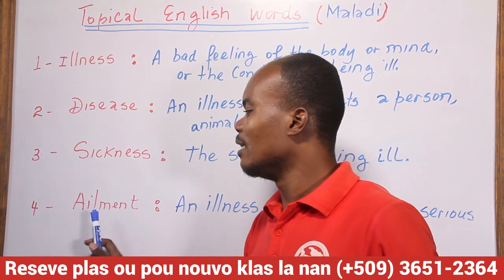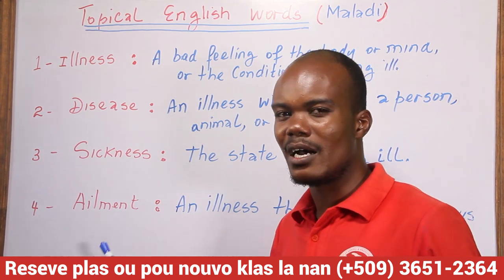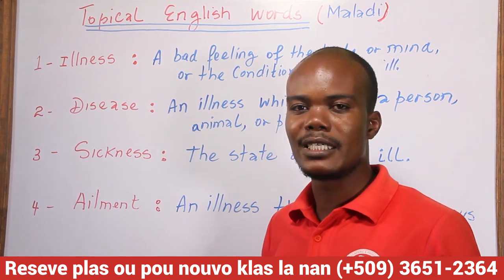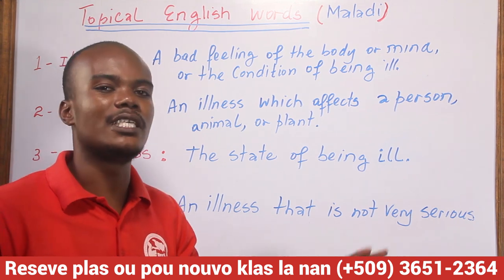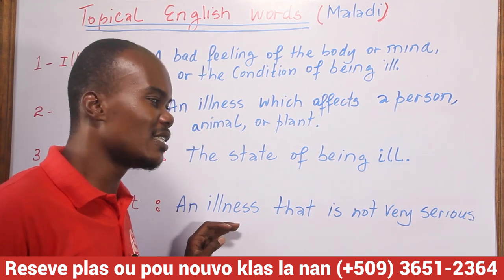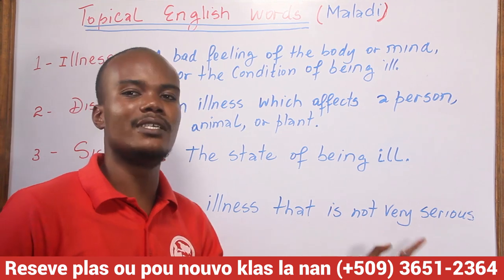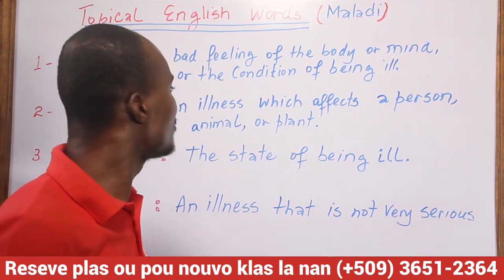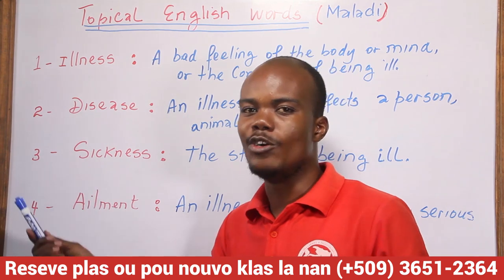After sickness, let's go for the last one. The last one is 'ailment.' An ailment is an illness that is not very serious. An ailment is a type of illness — a sickness — that is not too serious. All four words belong to the same package in English, meaning 'maladi' in Creole.